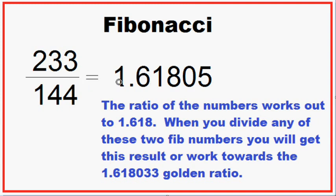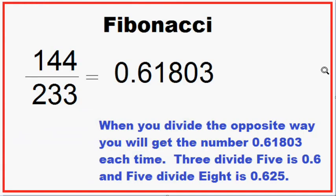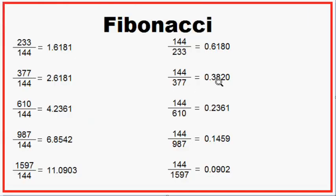For example, 233 divided by 144 gives 1.61805. And if we do the reverse — the smaller number divided by the larger number — you get 0.61803. It doesn't matter which number you start with; if you use 144 or 987, the bigger the number you use, the more accurate you will be towards the golden ratio.